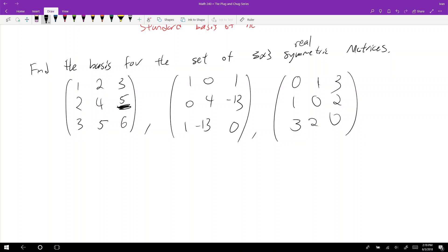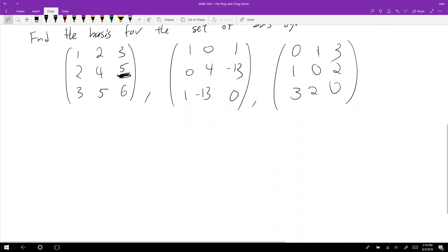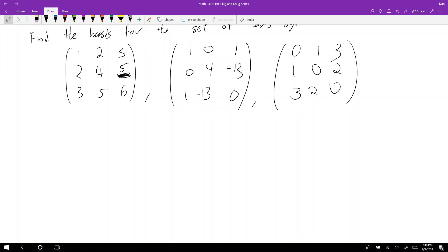What else? I can do like 1, 0, 1, 4, negative 13, negative 13, 0. I can have 0, 0, 0, 1, 1, 2, 2, 3, 3. That works. And so that's what just any 3 by 3 symmetric matrix looks like. Let's just put real here. It doesn't matter. Let's just deal with real numbers, which we pretty much do this entire semester.